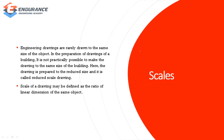First, what is the scale? For example, if you have a building, you will be able to set a scale. Engineering drawings are rarely drawn to the same size of the object. In the preparation of drawings of a building, it is not practically possible to make the drawing to the same size of the building. The drawing is prepared to reduce the size, and it is called a reduced scale drawing. The scale of a drawing is defined as the ratio of the linear dimension of the object.